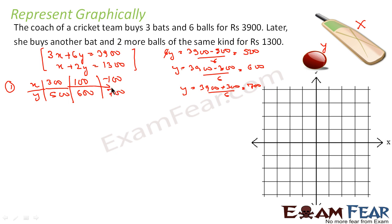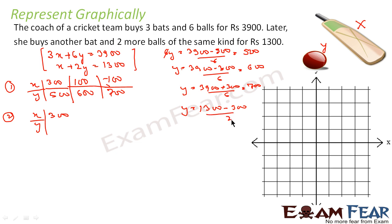Now for equation 2: x + 2y = 1300. If x = 300, then y = (1300 − 300) / 2 = 500. So the point is (300, 500). If x = 100, then y = (1300 − 100) / 2 = 600. So the point is (100, 600).